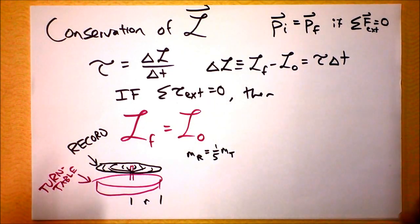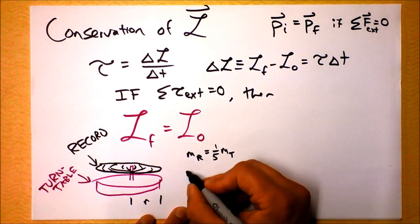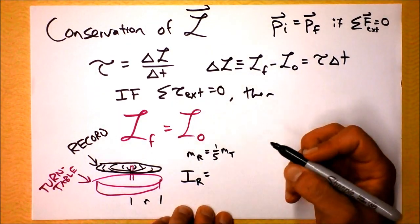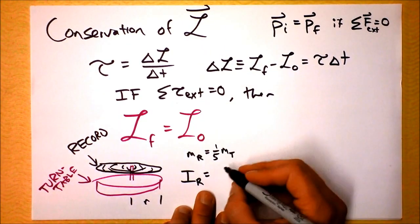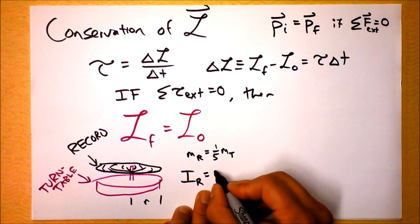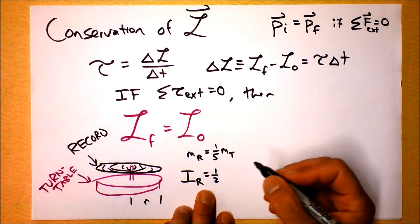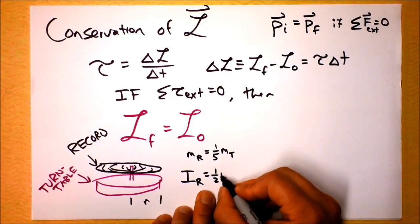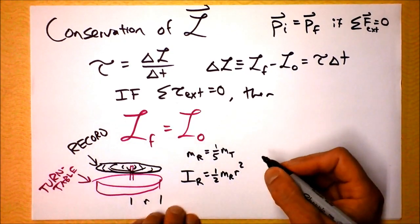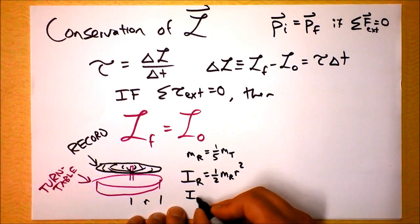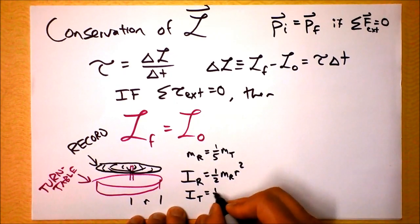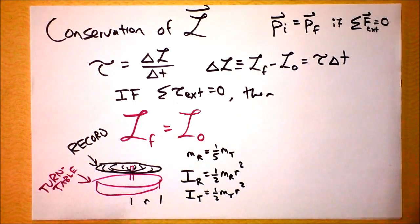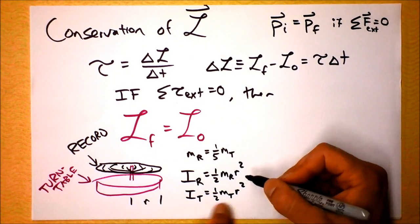So then we can look at the moments of inertia of the two things. We know that the moment of inertia of the record is equal to, well, let's see, the moment of inertia of the record is going to be one-half, because it's a cylinder, a solid cylinder, one-half the mass of the record times the radius squared. And the moment of inertia of the turntable will be one-half the mass times the radius squared, and those are the same radii.